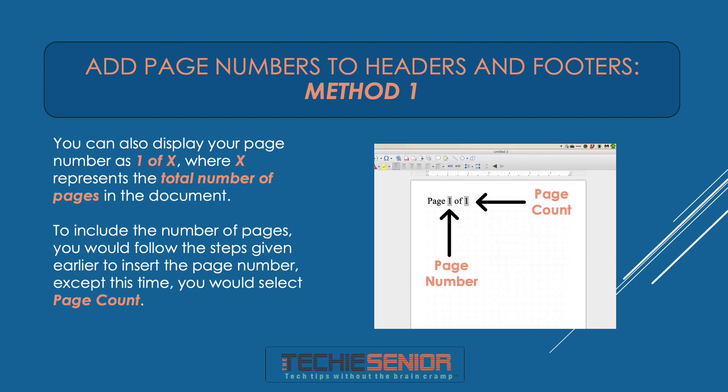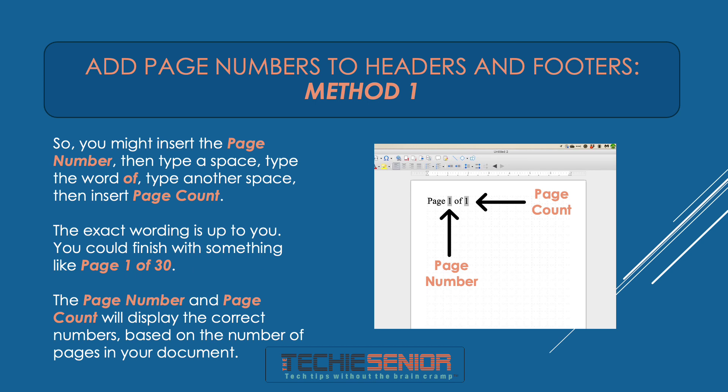Control+E on Windows or Command+E on Mac is the easiest way to center the page number. You can also display your page number as one of X, where X represents the total number of pages in the document. To include the number of pages, follow the steps given earlier to insert the page number, except this time select Page Count. So you might insert the page number, then type a space, type the word "of", type another space, then insert Page Count. You could finish with something like "Page 1 of 30". The page number and page count will display the correct numbers based on the number of pages in your document.